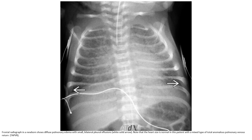This is the first example chest X-ray in a newborn. It shows pulmonary edema with small bilateral pleural effusions. Note that the heart is normal in size in this patient with a mixed type of total anomalous pulmonary venous return.